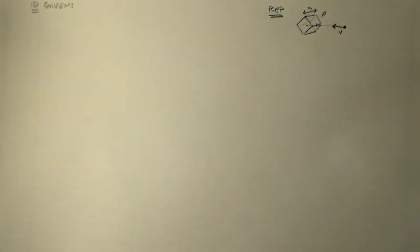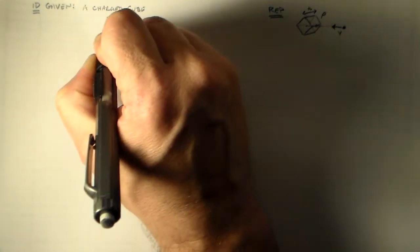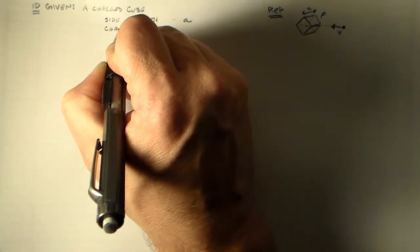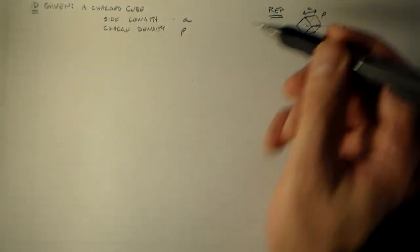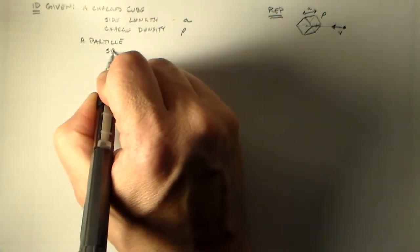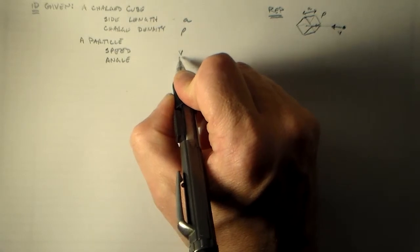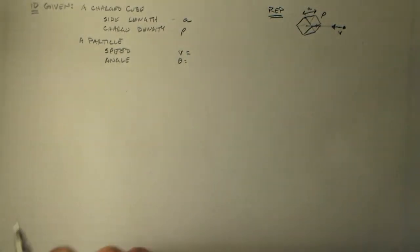The thing we want to do is we want to start by figuring out what exactly we have. We have a charged cube with a side length A and a charge density ρ. So this guy's coming in here at that speed, so we also have a particle that approaches it at speed V. And it's going to have an angle.